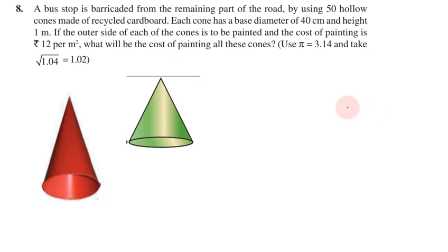A bus stop is barricaded from the remaining part of the road by using 50 hollow cones made of recycled cardboard. Each cone has base diameter 40 cm and height of 1 meter. If the outer side of each cone is to be painted at cost of 12 rupees per meter square, what will be the cost of painting all these cones?